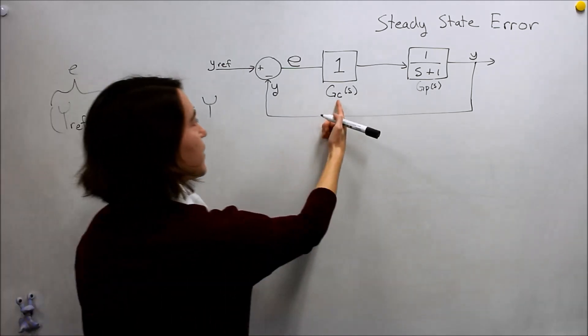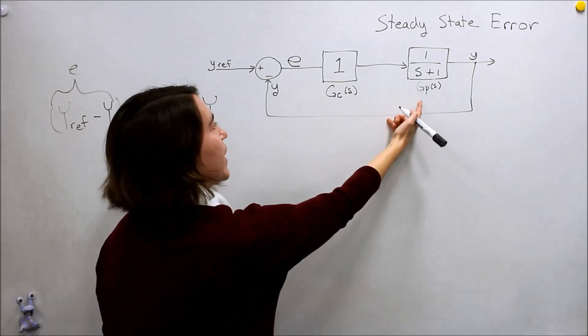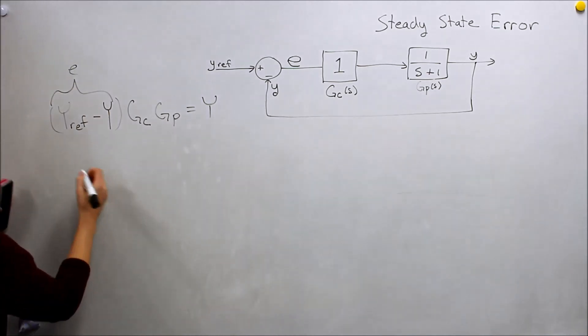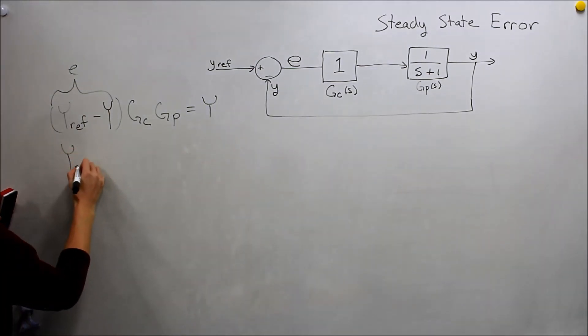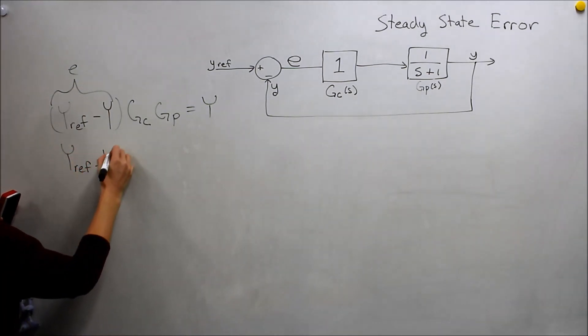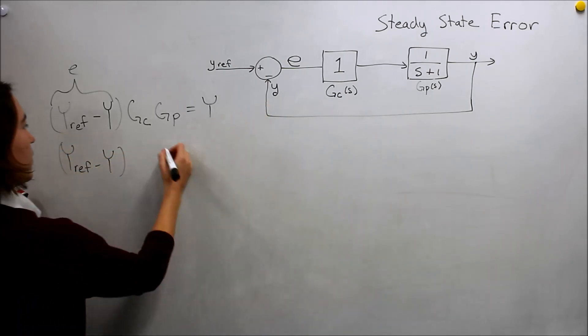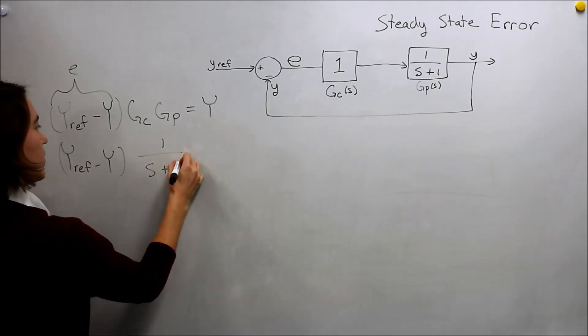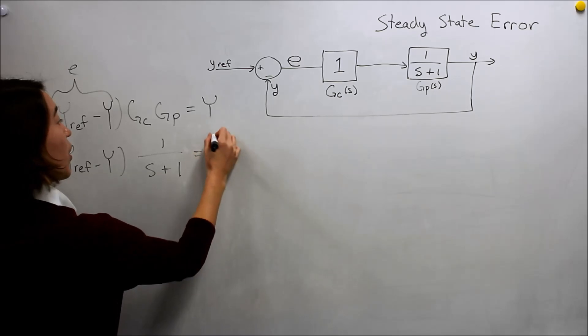Let's fill in our values here. Here we have proportional control and here's our system. Pretty easy, we end up with y_ref minus y multiplied by 1 over (s + 1), and then that equals our y again.